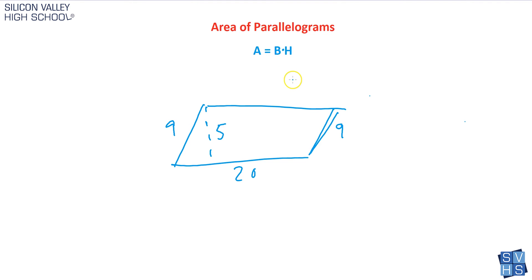It is still base times height. The only tricky part now is that the height is this exactly perpendicular to base side. It is not this side here, which they are going to be the same. But just remember that the base and the height have to be perpendicular to each other. So in this case, that'd be easy. Area equals base times height, 20 times 5, which is 100.